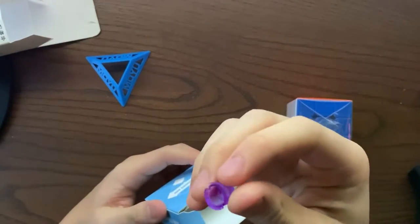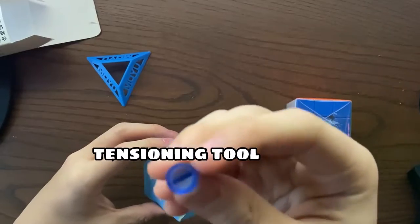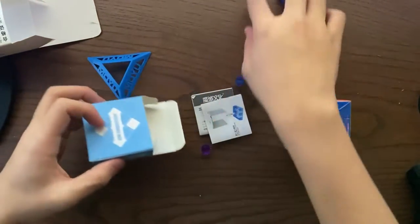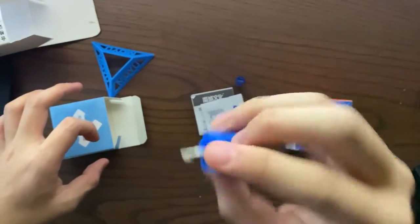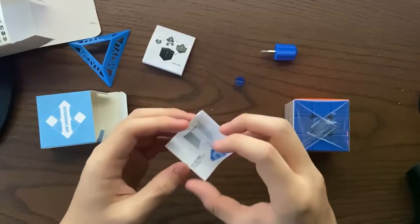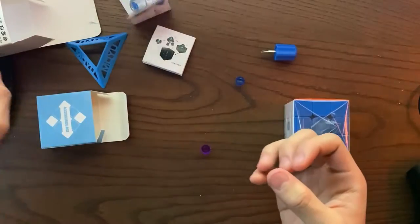First of all, it has spare tensioning parts. And also there is this tensioning tool for the spring system. And then there is the Moyu screwdriver, the classic one. And there is just the pamphlet of how to solve the cube and also a cube stand that we did not even get from the box.